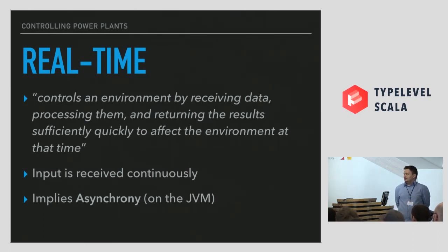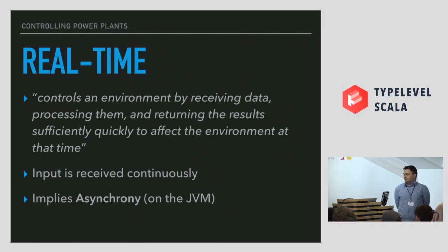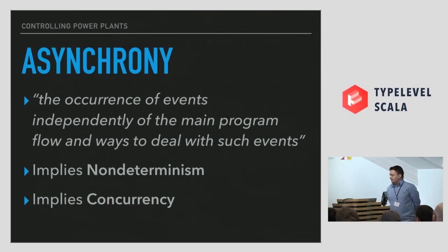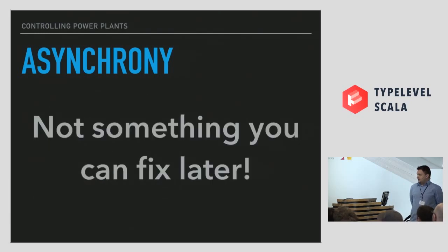Real time, as a sort of definition, is about systems that receive inputs describing the state of the world and reacting in real time to that input — changing the environment, sending commands, declaring faults, triggering alarms, and so on. On top of the JVM, this implies asynchrony, my favorite subject, because you often receive input from multiple sources at different times, and you have to merge and combine those input sources. This really implies non-determinism and concurrency — things that keep me awake at night.